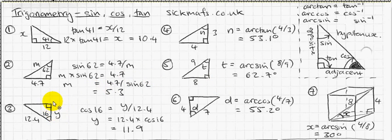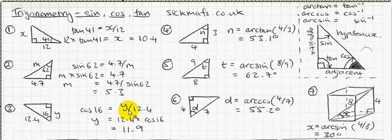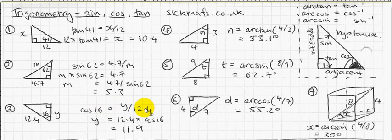Let's see another one. I've got the adjacent side to the angle and the hypotenuse — adjacent and hypotenuse. Cos tells me the answer to adjacent divided by hypotenuse. So cos 16 is equal to y divided by 12.4, the adjacent divided by the hypotenuse. Rearrange that, and I get y is equal to 11.9. Remember, cos 16 is a number, and to work out y, I do that number times 12.4, and I get 11.9.